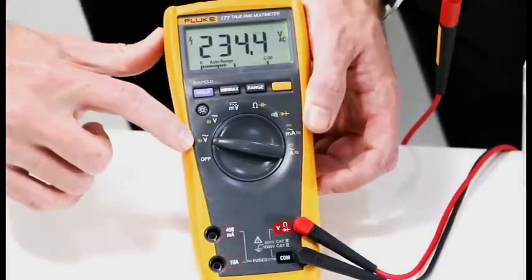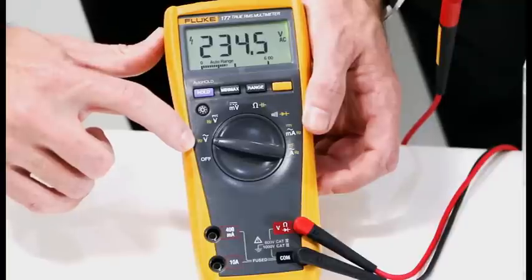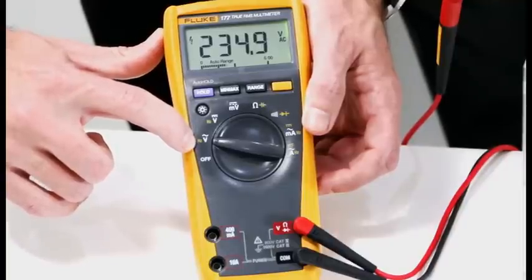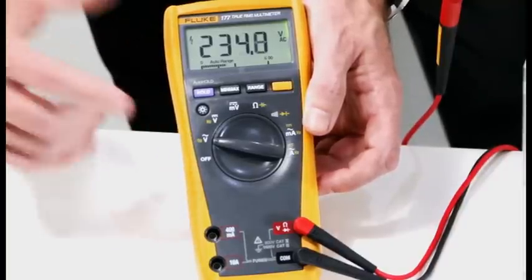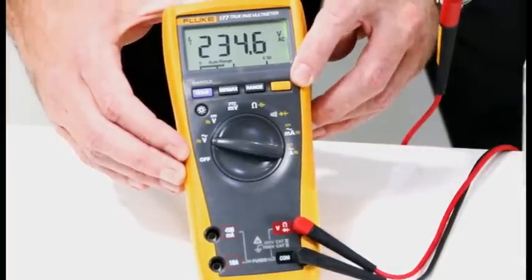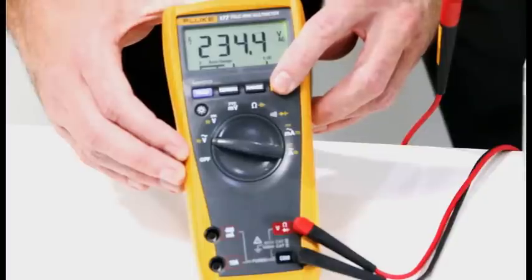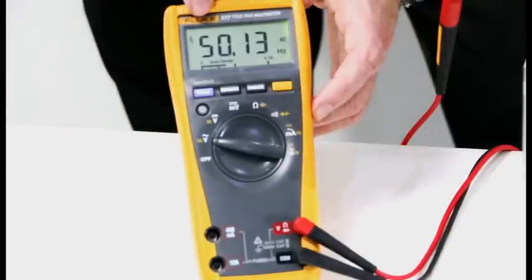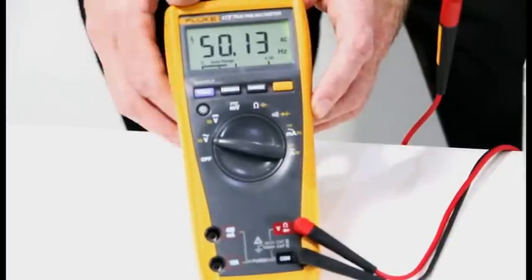In this function you can also see I've got an HZ signal which stands for Hertz, the unit for measuring frequency. For me to enable this function, I've got to press the yellow function key. By pressing it you can now see I'm measuring 50.13 Hertz.